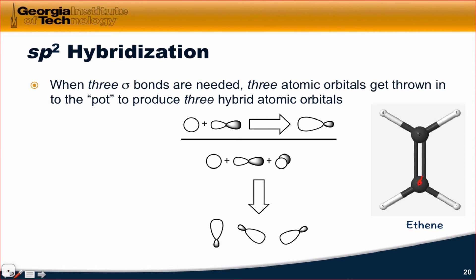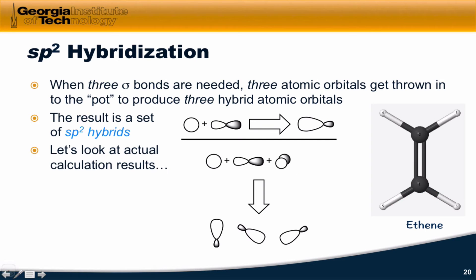When we only need 3 sigma bonds, as in a molecule like ethene or ethylene — which has only 3 sigma bonds coming from each carbon atom — SP2 hybridization is involved. We take 1 s orbital and 2 of the p orbitals to produce 3 hybrids. This is similar to SP3, except one of the p orbitals is left out. The resulting hybrids are at an angle of 120 degrees to each other and point along the locations of these sigma bonds. We started with 3 atomic orbitals and got 3 hybrid orbitals out.